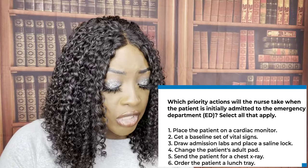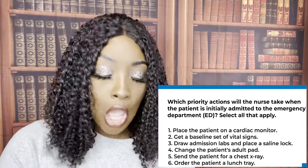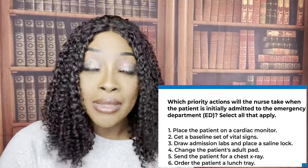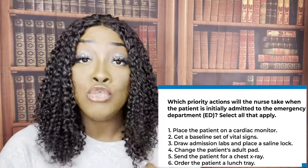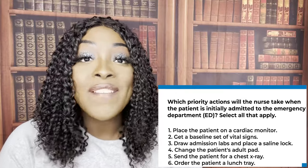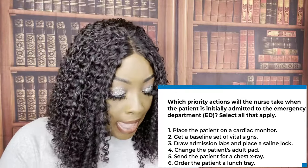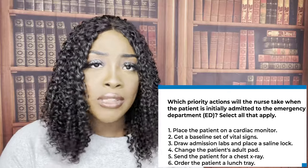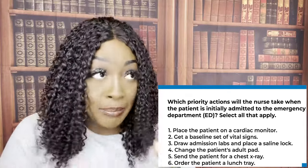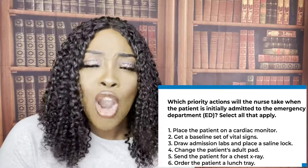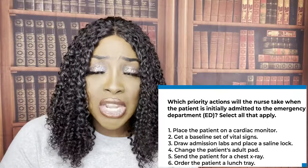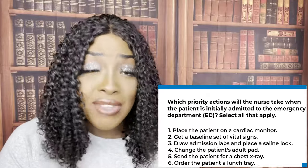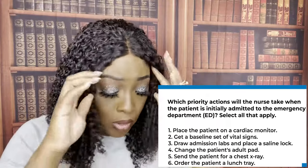Number four: change the patient's adult pad — False. That is something you can delegate to an unlicensed assistive personnel, and it's not a priority. Whenever you get a test question about priority, think Maslow's hierarchy of needs — what physically keeps your patient alive the longest? Number five: send the patient for a chest X-ray — True. We need to see what's going on with the patient: do they have pneumonia, bronchitis, or something else? We want to see what's going on given their respiratory history. Number six: order the patient a lunch tray — False. We can do that later, but this patient just came in. We need to get baselines and find out what's going on. Getting them lunch is not a priority.